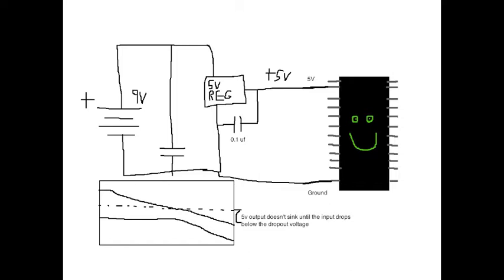So, for a 5 volt regulated circuit, 9 volts is plenty enough headroom. Because, if your battery drains to the point where the dropout voltage becomes an issue, it's probably not going to be able to provide hardly any current whatsoever at that point, anyway.